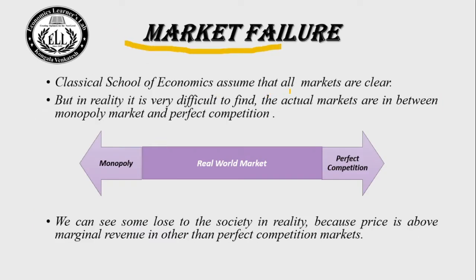The classical school of economics assumes that all markets are clear, meaning there will be an efficient level of output. But in reality, it is very difficult to find actual markets — they exist somewhere between monopoly and perfect competitive markets. In reality, you cannot see a purely monopoly market or a pure perfect competitive market; you can only see imperfect competitive markets. In these imperfect competitive markets, price is above marginal cost, leading to some loss to society.